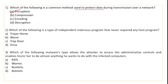Which of the following is the type of independent malicious program that never requires any host program? It is an independent malicious program which does not need a host program and works independently. The correct option is worm. A worm is a standalone program which creates its own copies and replicates. If your system is connected to a network, it can corrupt other systems.